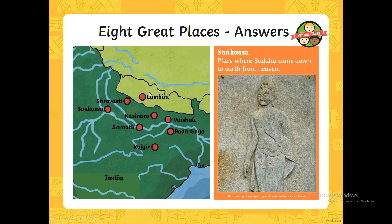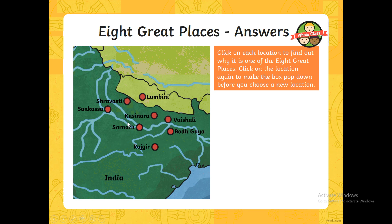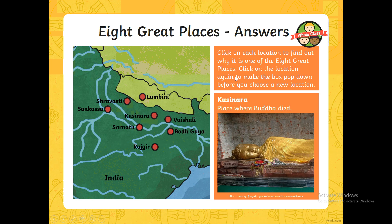We've got Sankasa, which is where Buddha came down to earth from heaven, so people may want to visit there as well. We have Kusanara, which is where Buddha died. Sometimes people want to go and visit where their God died. As part of a pilgrimage, they may even want to visit all of these sites.